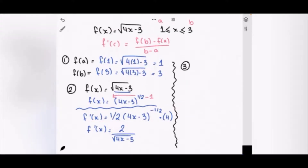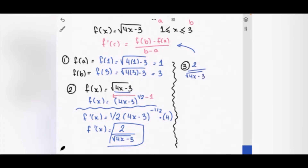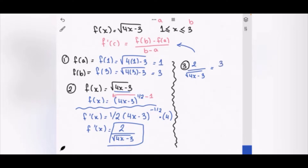The third step is to apply the MVT equation. So f'(c) = 2 / √(4c - 3). Setting this equal to [f(b) - f(a)] / (b - a) = (3 - 1) / (3 - 1) = 1, we get 2 / √(4x - 3) = 1.